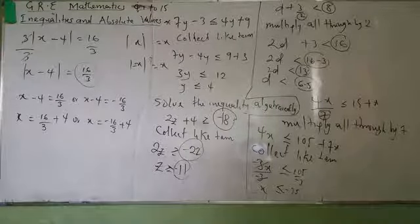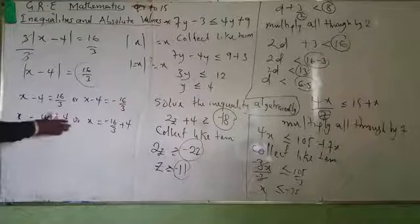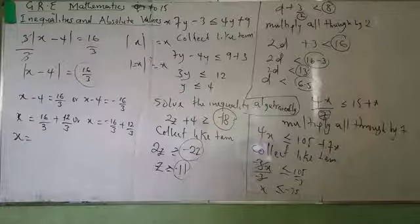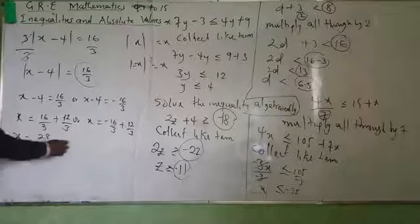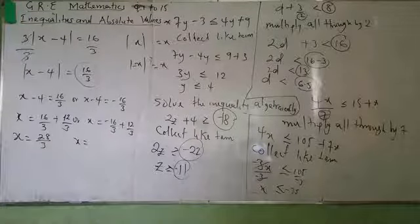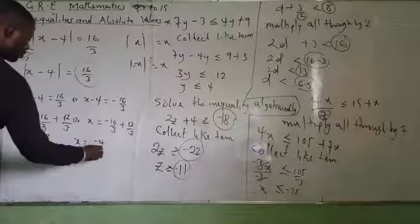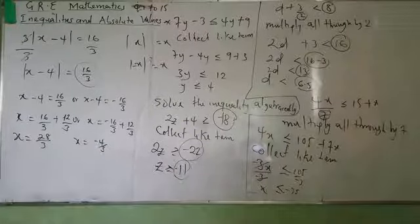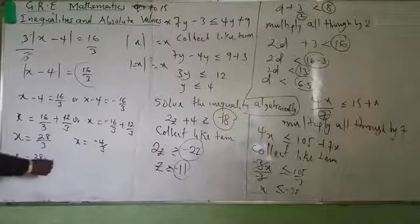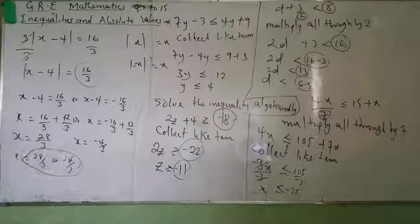Those are the two conditions that will satisfy that equation: X equals 28 over 3, or X equals minus 4 over 3.